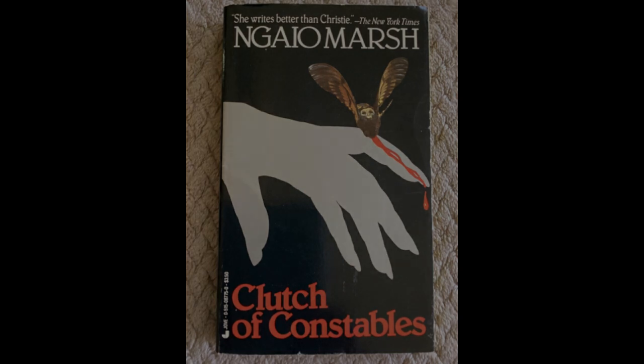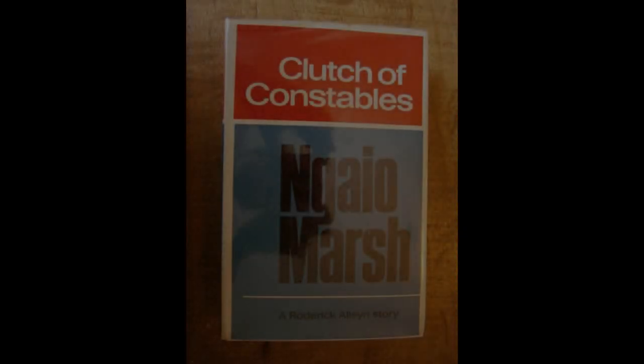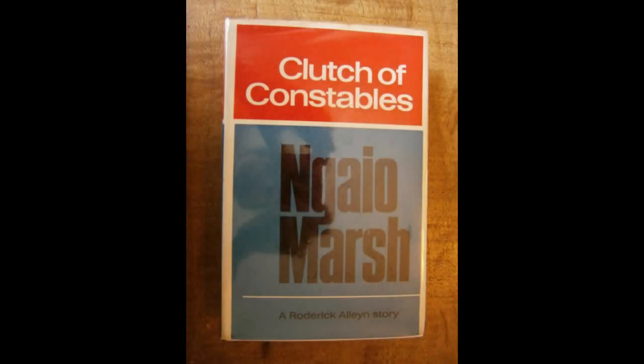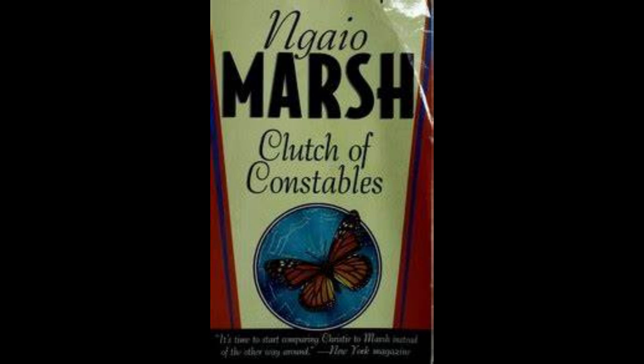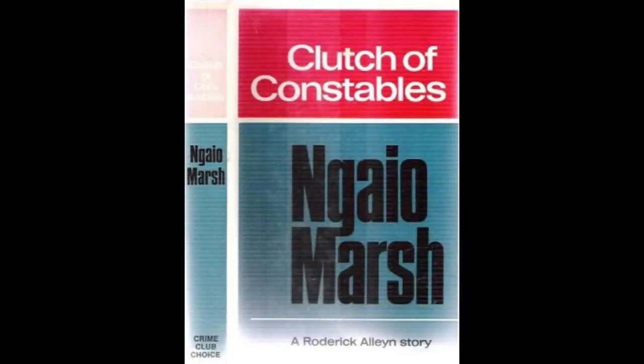In Clutch of Constables, Marsh also explores the theme of art as a way of seeing and understanding the world. Troy's ability to observe and interpret both the literal and metaphorical colors of people and situations plays a critical role in her survival. The idea that art can reveal truths hidden from the untrained eye runs throughout the novel, adding a philosophical dimension to the crime-solving aspect. Marsh contrasts this with the darker side of human nature, as the motives for murder are revealed to be as complex and multifaceted as the paintings Troy creates.